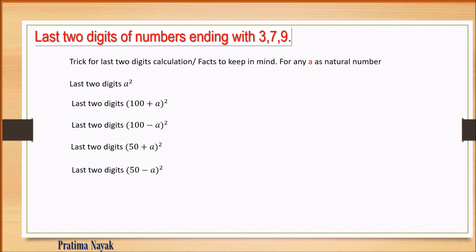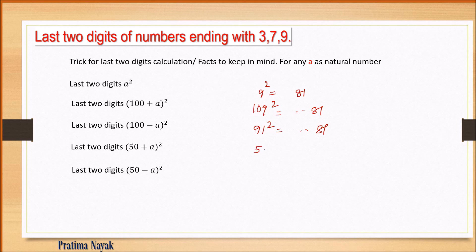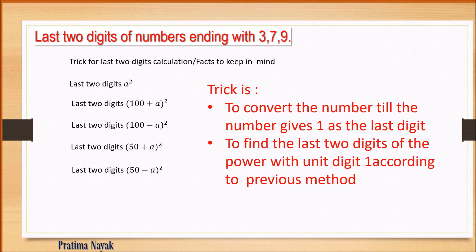For example, 9 squared ends in 81. Then (100 + 9) = 109 squared also ends in 81. (100 − 9) = 91 squared also ends in 81. (50 + 9) = 59 squared also ends in 81, and (50 − 9) = 41 squared also ends in 81. The concept is to convert these numbers so that the last two digits become 81, i.e., the unit digit becomes 1.